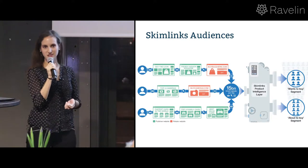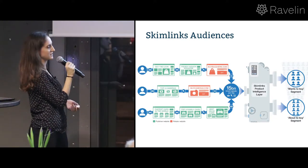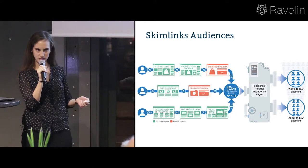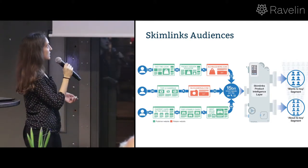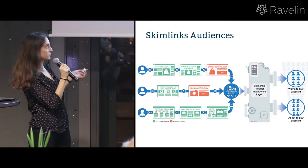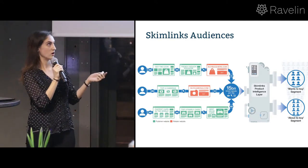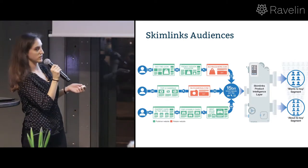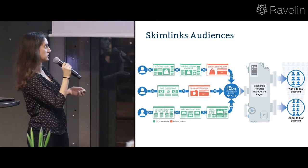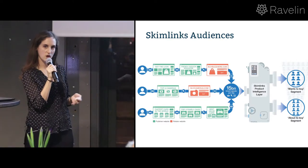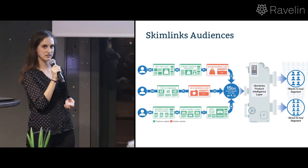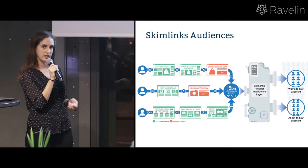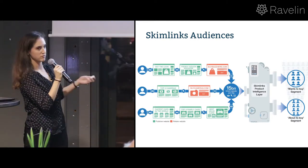We launched a new line of products last week called Skimlinks Audiences. Affiliate marketing is the core business, but this is the new stuff we're coming up with. Basically, Skimlinks Audiences means we can understand user behavior — we see when a user visited a web page, try to understand the content using NLP technology, add other metadata about products, and then come up with groups of users we believe are interested in a product category or brand, which we give back to our publishers.